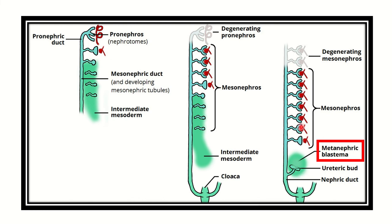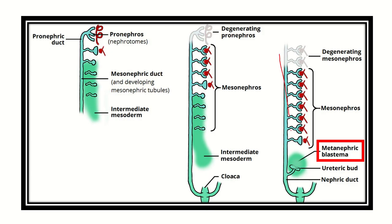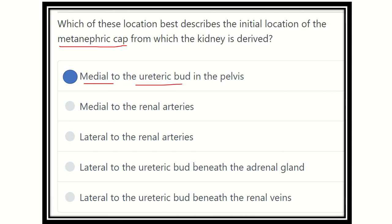The metanephric blastoma is not closely related to the renal vessels, and we can see the ureteric bud present here. On the blue side, the metanephric blastoma is located on the medial side in the lower part — that means in the pelvis. It is now clear that the metanephric cap or metanephric blastoma is located medial to the ureteric bud, which is the long structure visible here.